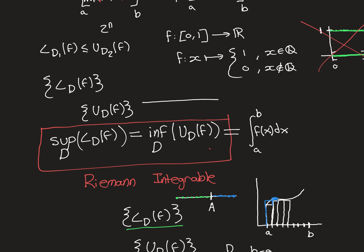To reiterate: if the supremum over all dissections of the lower Riemann sums equals the infimum over all dissections of the upper Riemann sums, then we call the function Riemann integrable — that's the precise definition. This is actually not the definition Riemann initially came up with; it's equivalent to Riemann's initial definition. This is the Darboux definition for Riemann integrability. That common value of the supremum of the lower Riemann sums and the infimum of the upper Riemann sums is what we call the Riemann integral of the function over the interval a, b.